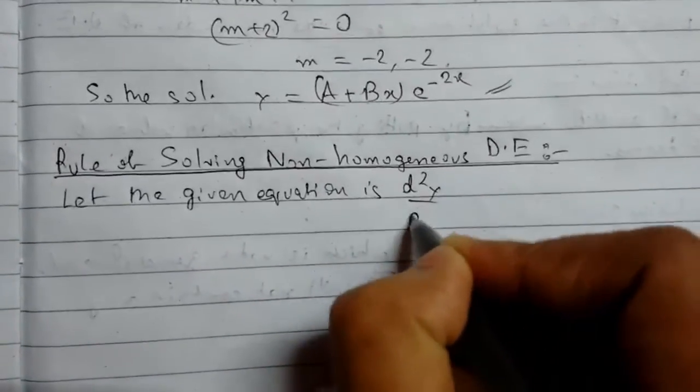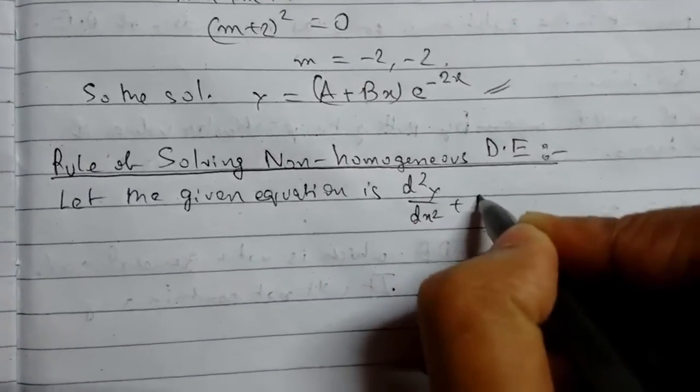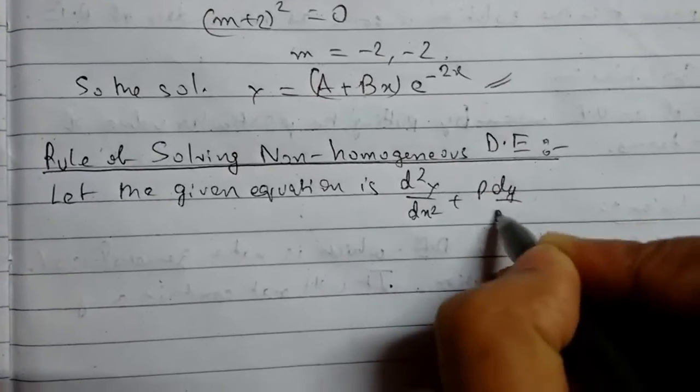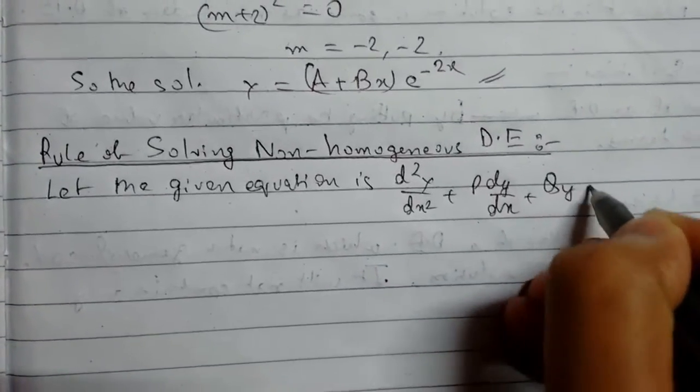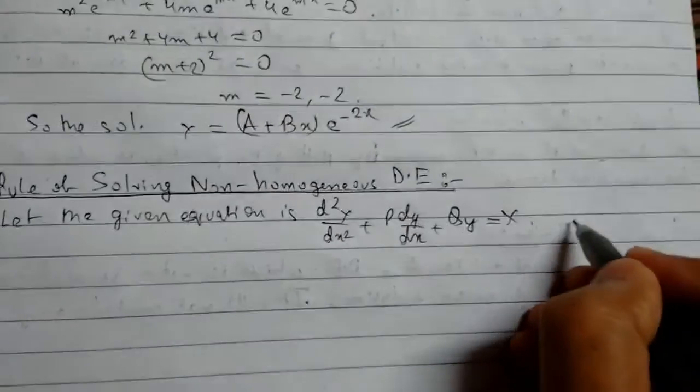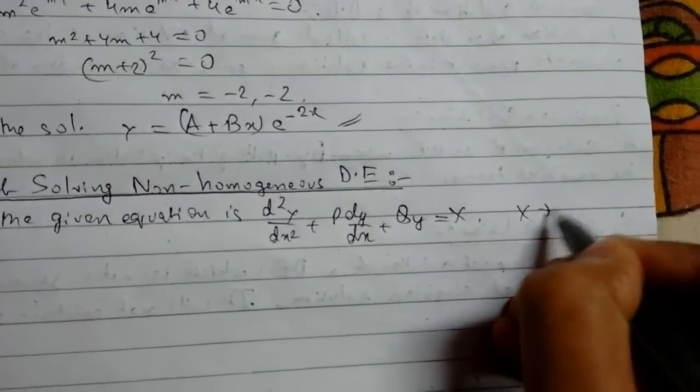Let the given equation is d²y/dx² plus p dy/dx plus qy equals x, where we know that x is a function of x.